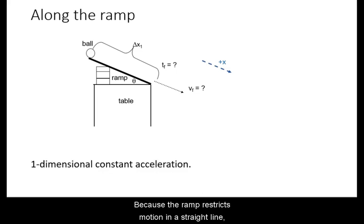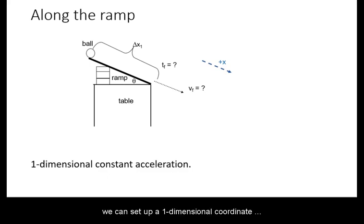Because the ramp restricts motion in a straight line, we can set up a one-dimensional coordinate system along it. We set the displacement along the ramp and measure the time of a roll.